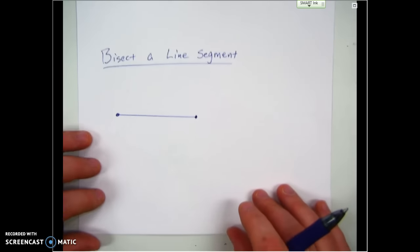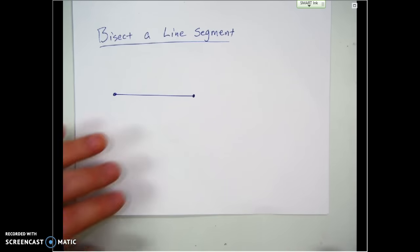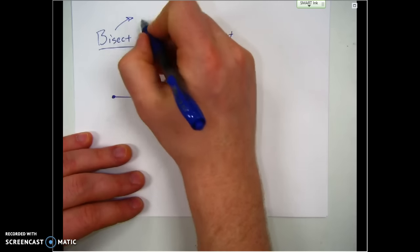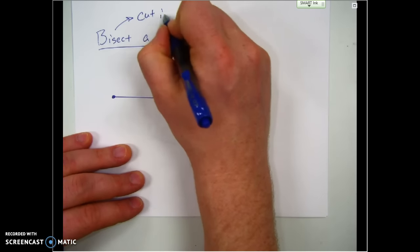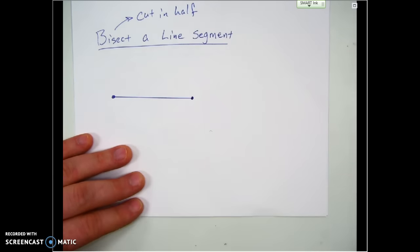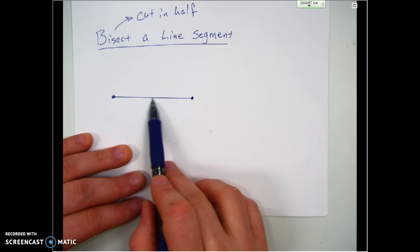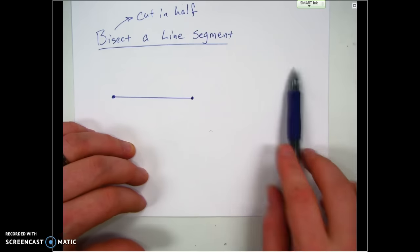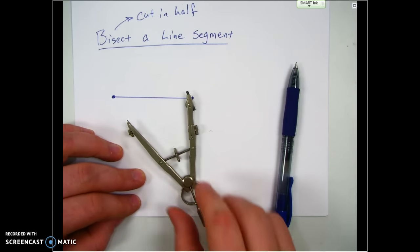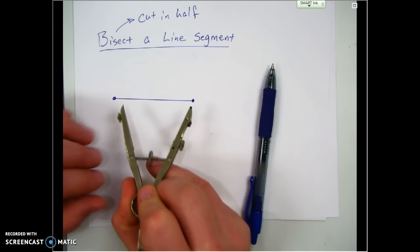The second easiest construction we can do is bisecting a line segment. So here's another line segment. Everybody remembers what bisect means — it just means cut in half. You can probably approximately figure out where the midpoint of this line segment should be, but we can use our compass to figure out exactly where that midpoint is.